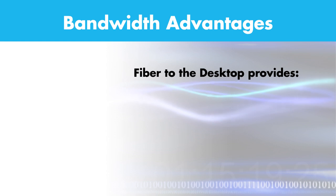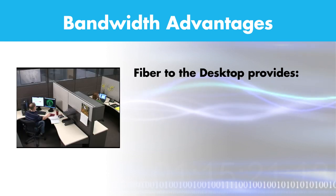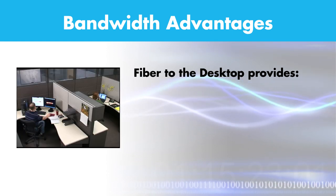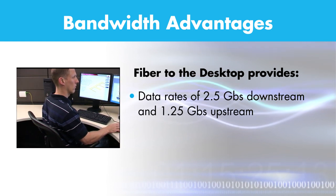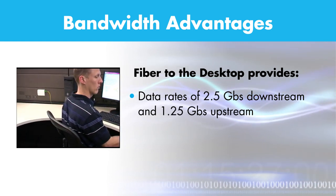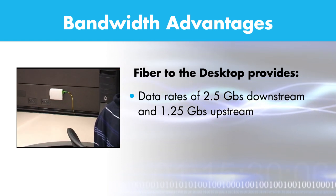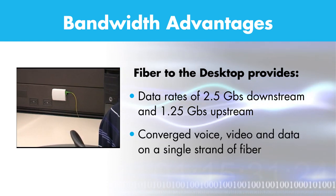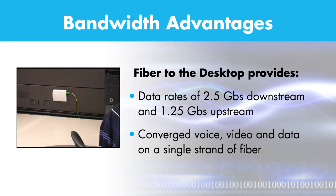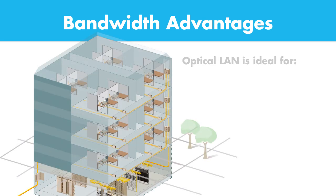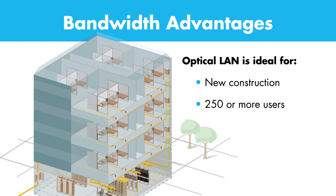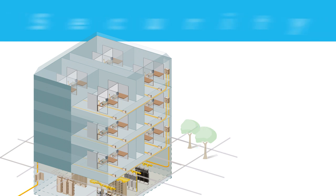And finally, there are significant bandwidth advantages. Using single-mode fiber all the way to the user provides data rates up to 2.5 Gbps downstream and 1.25 Gbps upstream. Converged voice, video and data on a single strand of fiber. These benefits make Optical LAN solutions ideal for new construction, settings with 250 or more users, network and infrastructure upgrades and even campus environments.